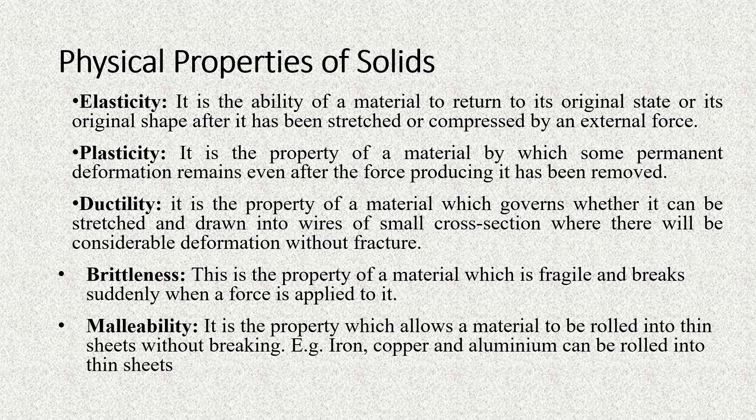Malleability is the property which allows a material to be rolled into thin sheets without breaking. For example, iron, copper, and aluminum can be rolled into thin sheets.